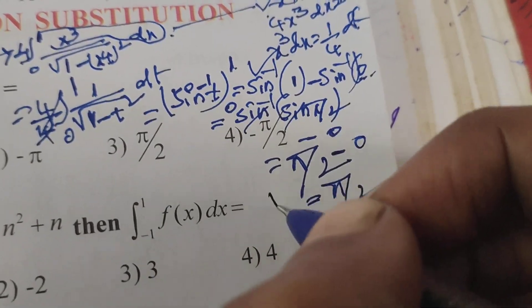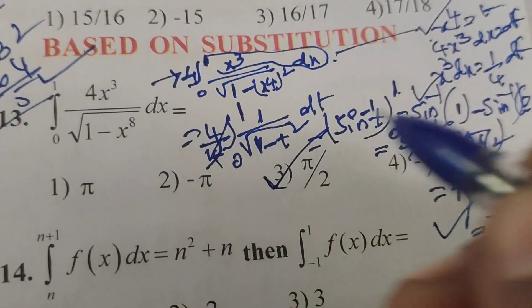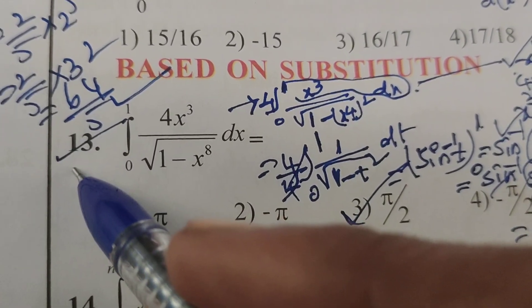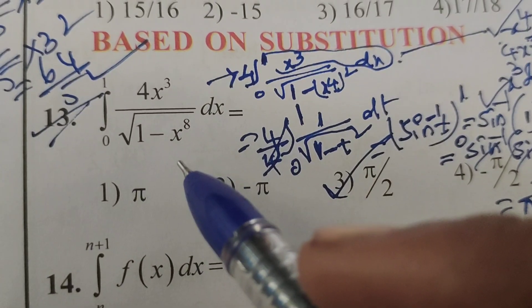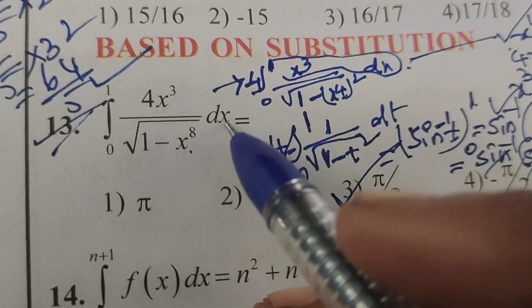π/2 is the solution. This evaluated definite integral problem: integral 0 to 1, 4x³ by root of 1 minus x⁸ dx. Thank you.